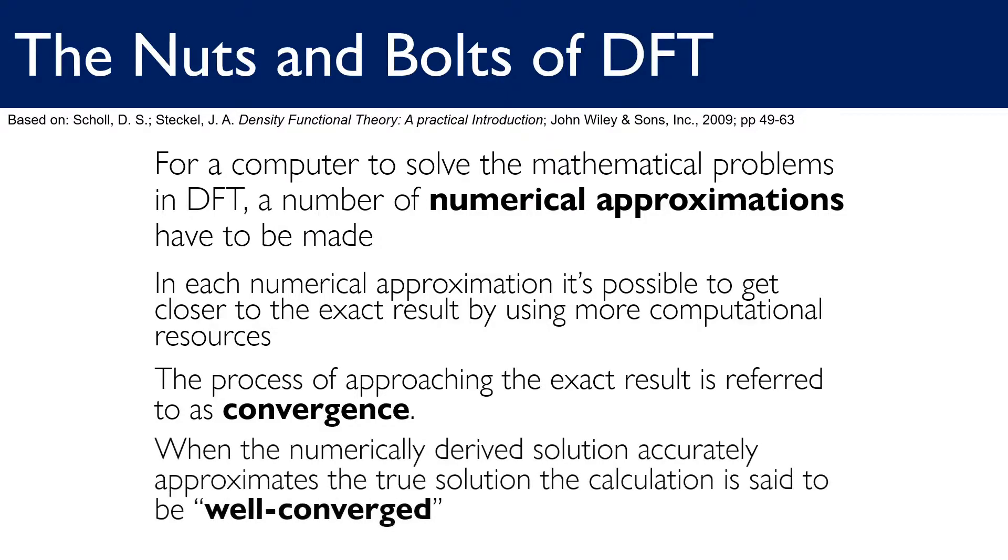A well-converged calculation is one where the numerically derived solution accurately approximates the true solution of the problem posed by DFT with a specific exchange correlation functional. It's important to note that the idea of numerical convergence is quite separate from whether or not a DFT calculation actually gives an accurate description of reality. You might remember from the first episode in this series that the exact solution of a DFT problem is unlikely to be identical to the exact solution of the Schrodinger equation, simply because the true form of the exchange correlation functional is not known.